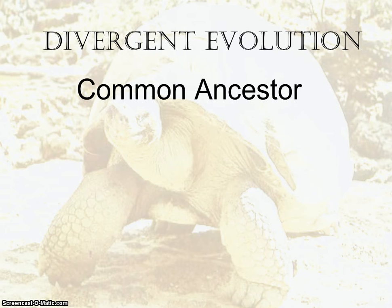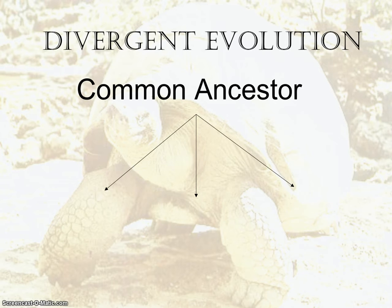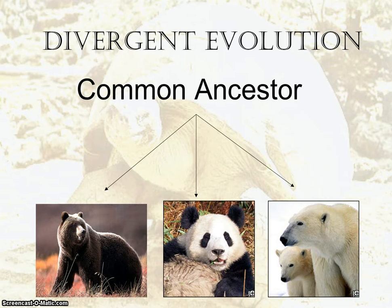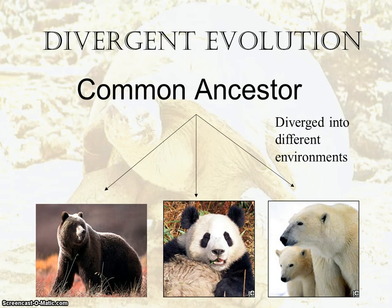The way divergent evolution works is: if you start at the beginning of a particular group of organisms, they started out with a common ancestor, but they diverged into unique individual species based on the environments that they're found in. The grizzly versus the panda versus the polar bear is a good example of how the bear diverged into different species of bear based on the environments they were found in.